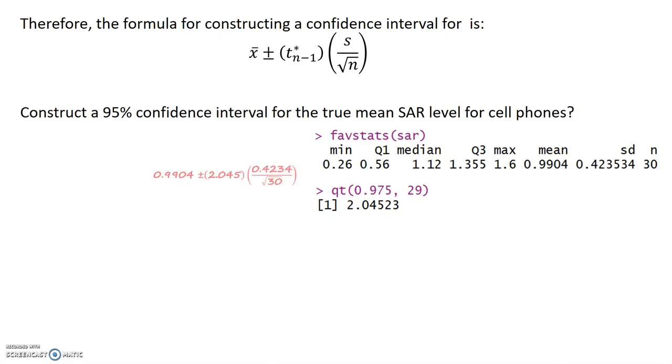Now, I can put all this information in the formula to obtain my confidence interval. So, again, I'll start with my sample mean, 0.9904, and then add and subtract the margin of error. The margin of error ends up being 0.1581, and you can verify this on your own.